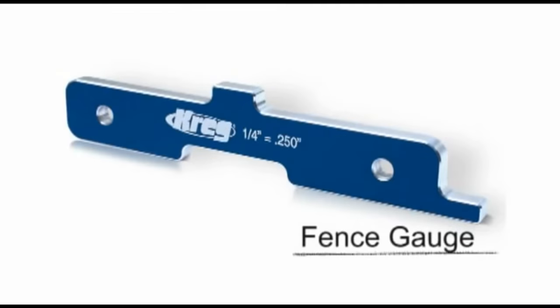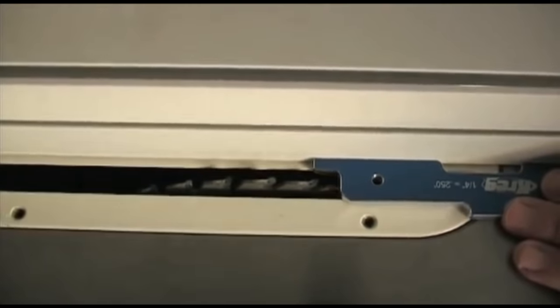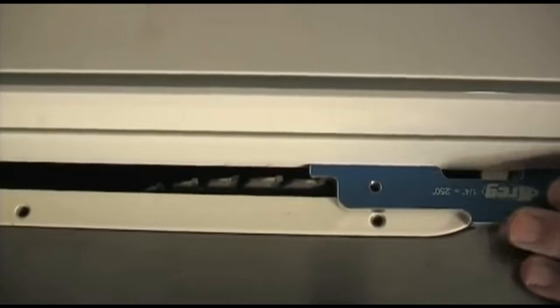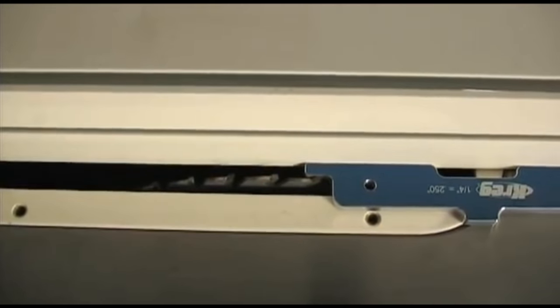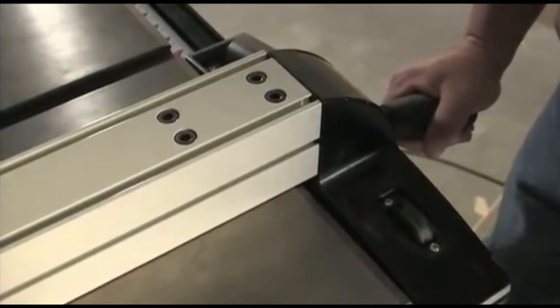Next, adjust the fence using the fence gauge. Simply place the gauge against the fence and slide the bar over until the fence lights the cutting edge. Lock the fence down and you're ready to cut.